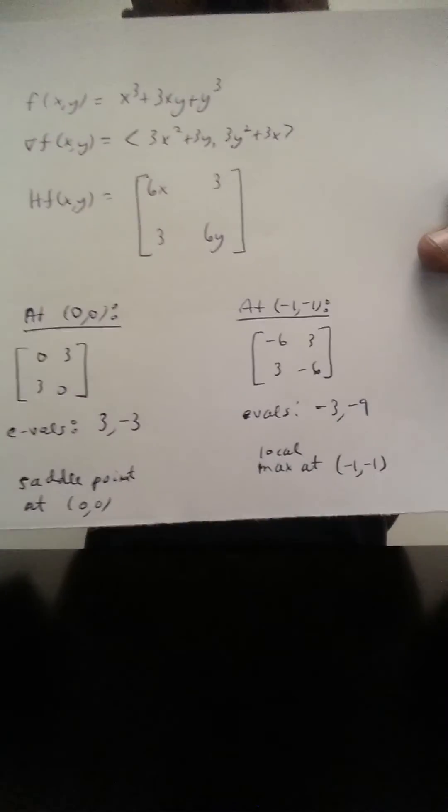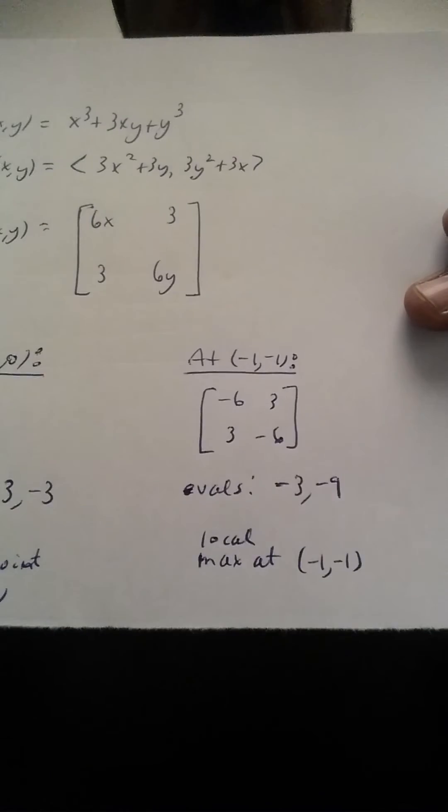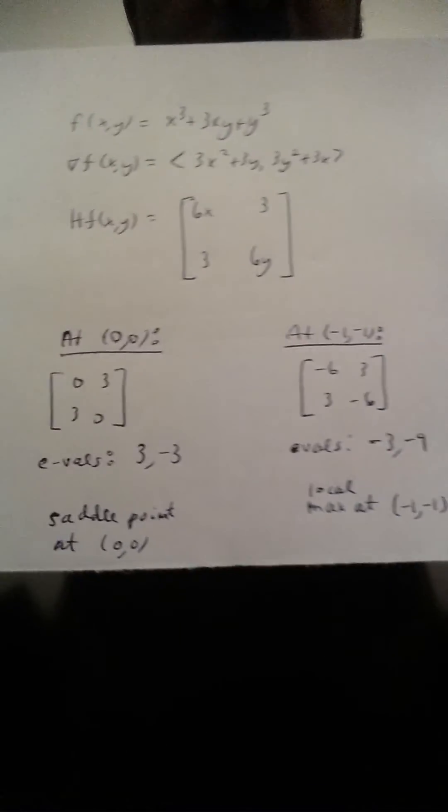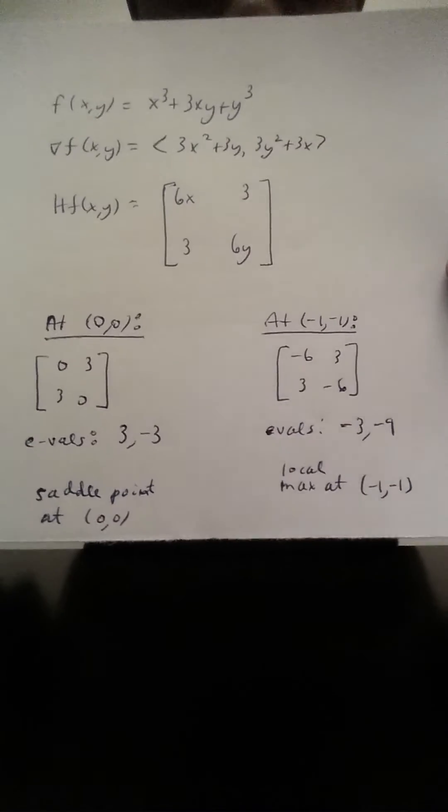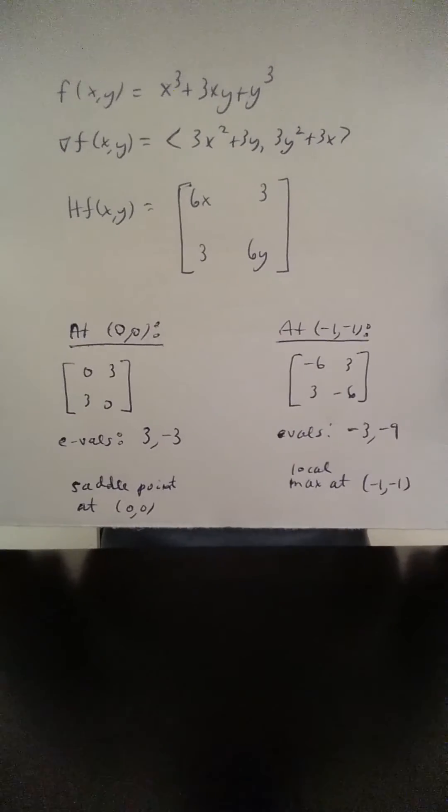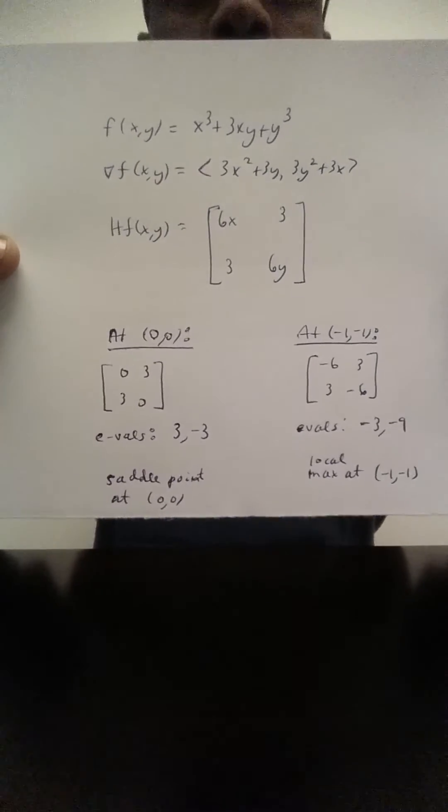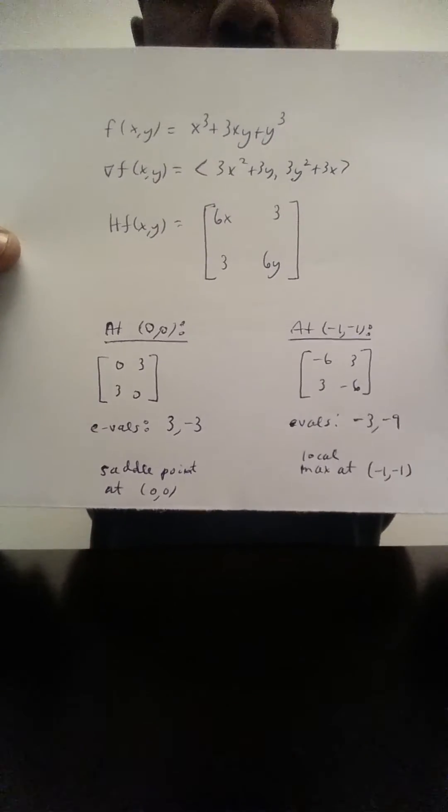And now written down the eigenvalues of these matrices here, -3, -9 and 3, -3 respectively. So the second derivative test tells us that we have a local max at (-1, -1) and a saddle point at (0, 0).